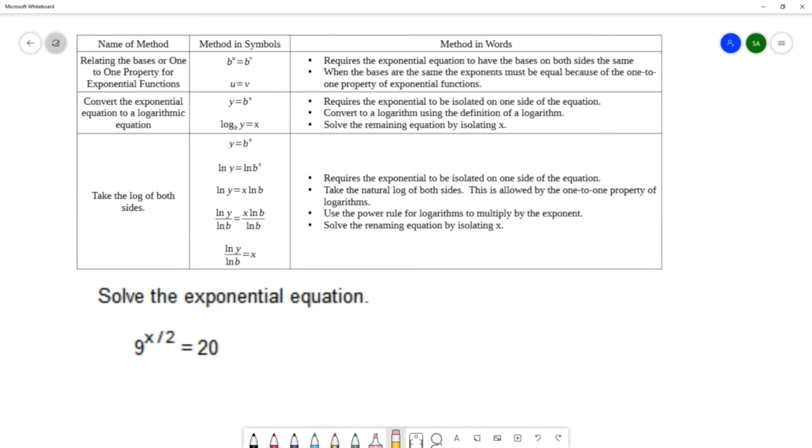But 20 is not an exponential expression. It can't be changed to—I guess technically it can be written as 20 to the first power, but we can't change that base to some other base easily. So this method of relating the bases cannot be used in this example.